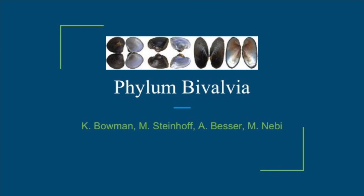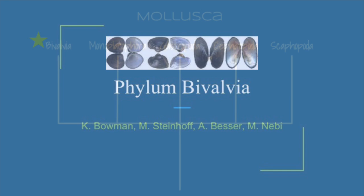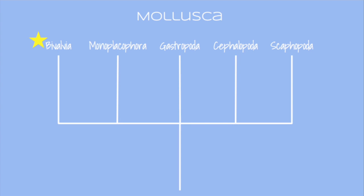As you have probably already guessed, this is Phylum Bivalvia. The phylogenetic tree for Phylum Mollusca includes Bivalvia, Monoplacophora, Gastropoda, Cephalopoda, and Scaphopoda.